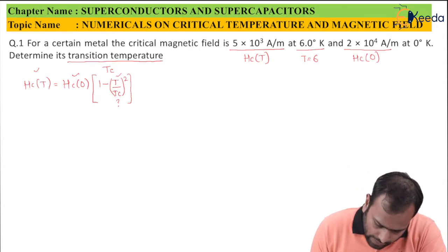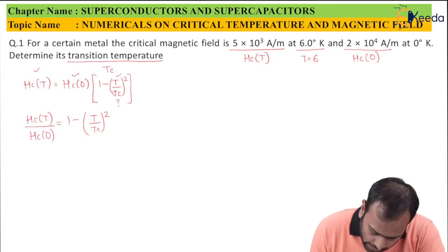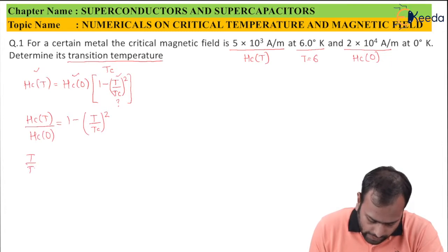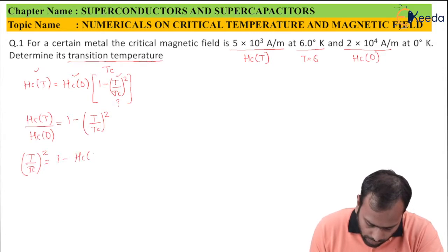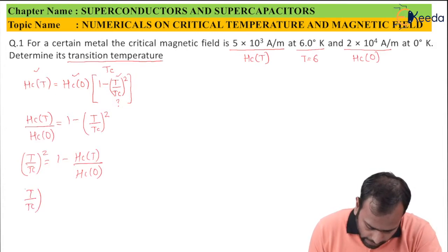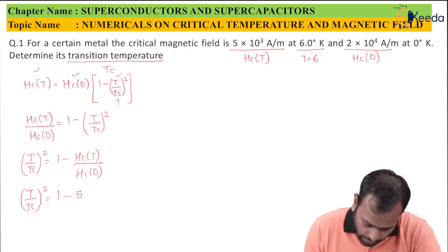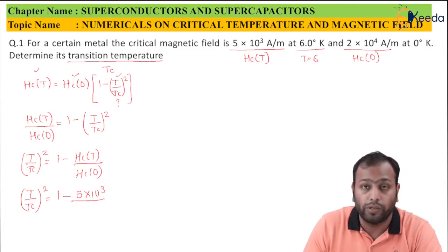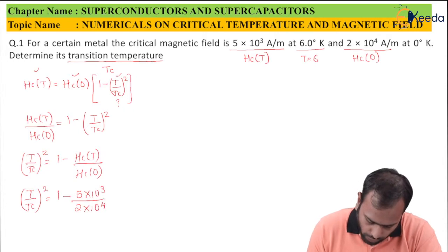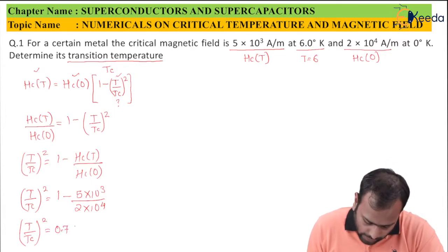Let's solve this. We take Hc(T)/Hc(0) = 1 − (T/Tc)², which rearranges to (T/Tc)² = 1 − Hc(T)/Hc(0). Plugging in the values: (T/Tc)² = 1 − (5×10³)/(2×10⁴). On solving, you get the value 0.75.